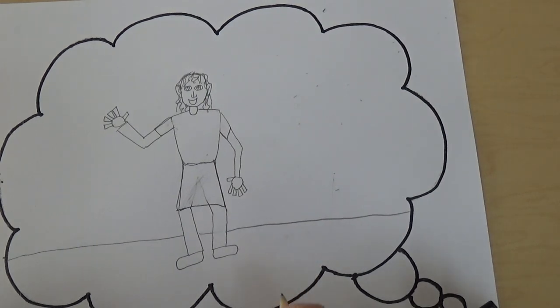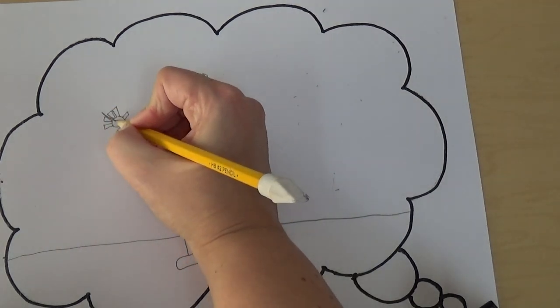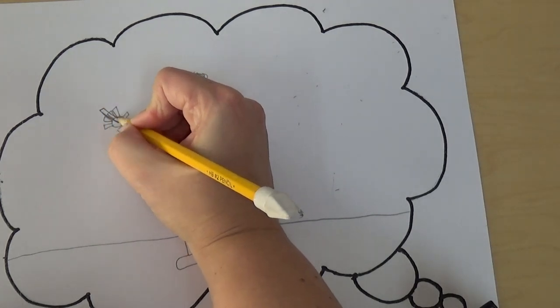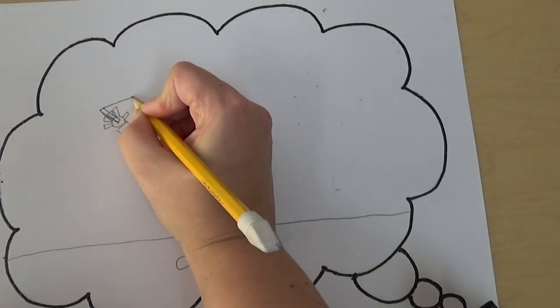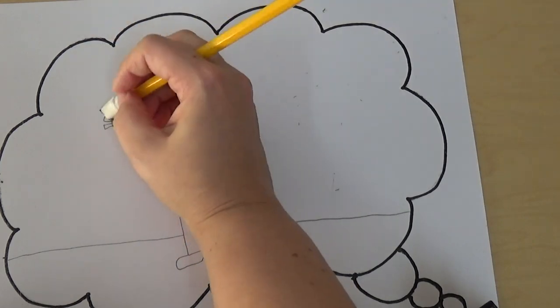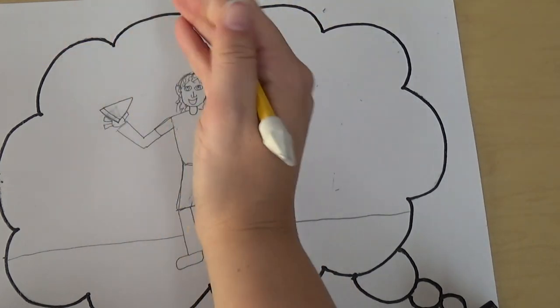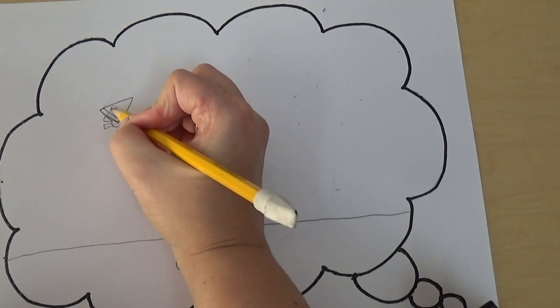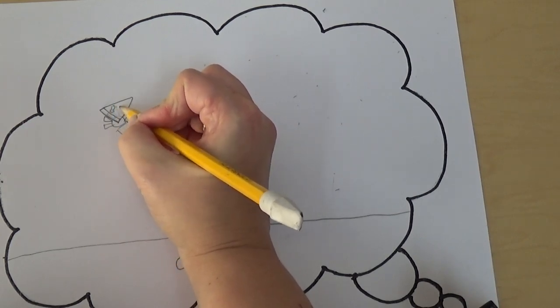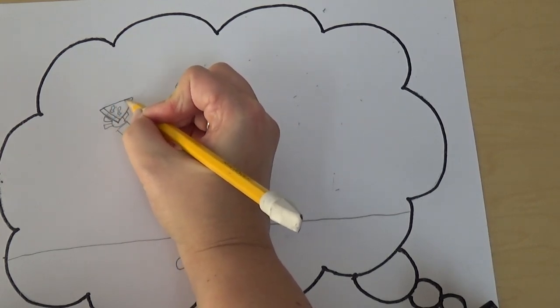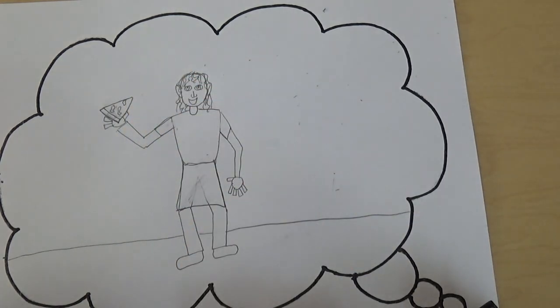And then I think I am going to draw a piece of pizza in my hand. Because mine is going to be about the time when I had a delicious piece of pizza. We made homemade pizza at my house one time. And it was so delicious. So I am going to draw a piece of pizza with some vegetables on it in my hand.